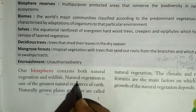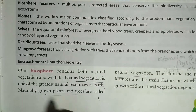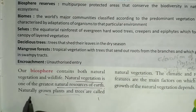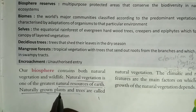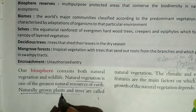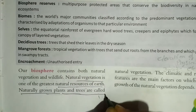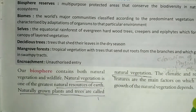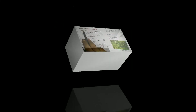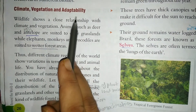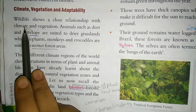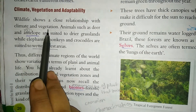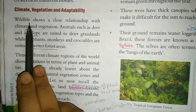What is natural vegetation? Natural vegetation is one of the greatest natural resources of the earth. Plants that are naturally grown are called natural vegetation. Climate, vegetation, and adaptability show a close relationship with each other.